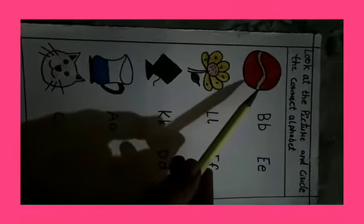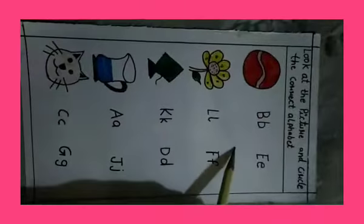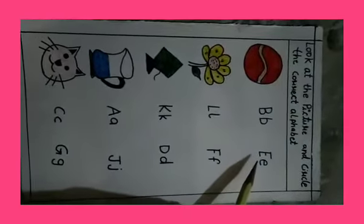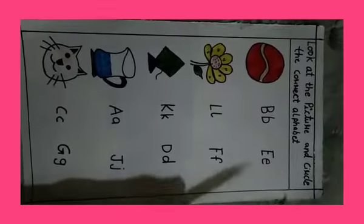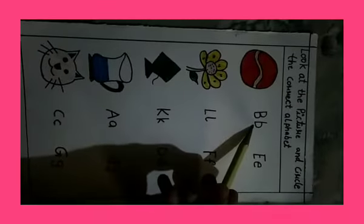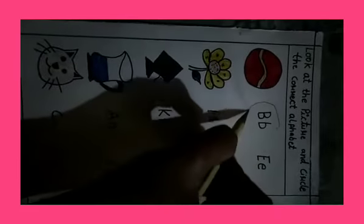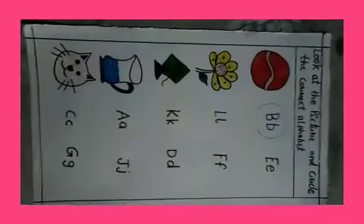What is this? Ball. See the alphabets. What is this? E. Is ball start with E? No. Which is right alphabet? Here. B. So we have to circle this alphabet. See.